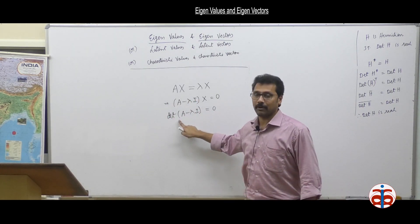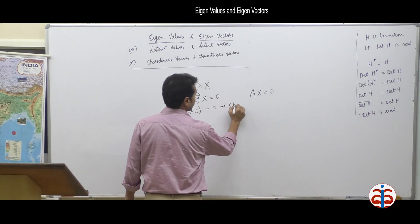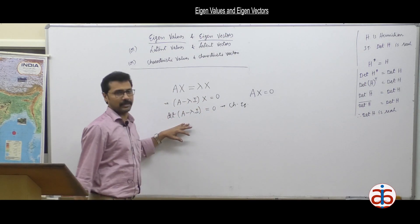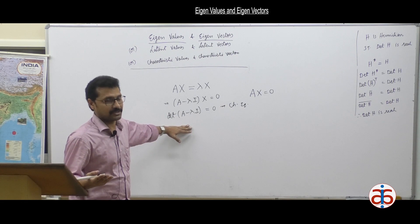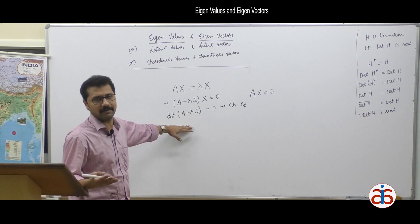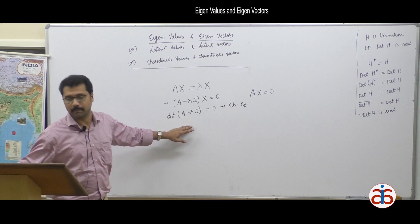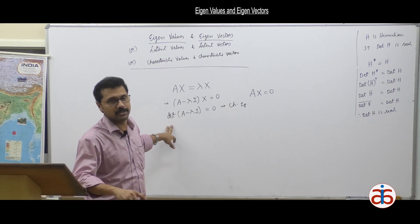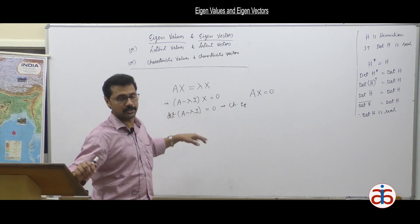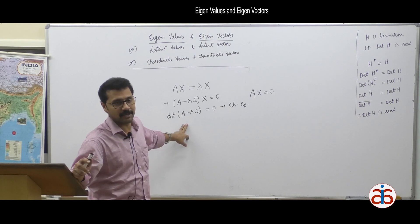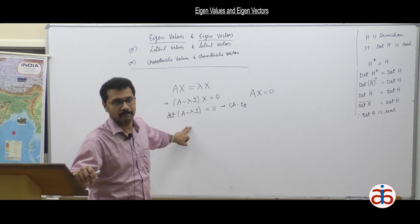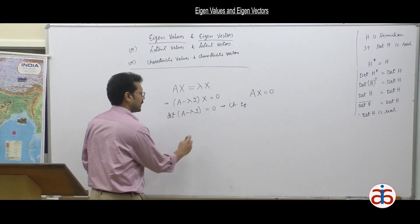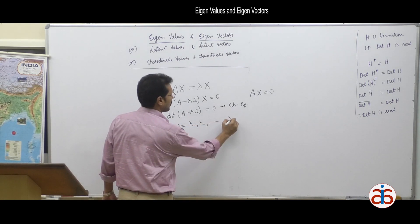Setting the determinant of (A minus lambda I) equal to 0 gives us an nth degree polynomial in terms of lambda, also called the characteristic equation. By the fundamental theorem of algebra, an nth degree polynomial always has n roots — real or imaginary — so lambda equals lambda 1, lambda 2, up to lambda n.